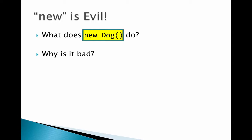Why might that be bad? You have to create objects, but why might it be bad to say `new Dog` in your code? You're creating some tight coupling. Anytime you say `new SomeClass`, you're coupling your class directly to another class. So if the other class — the Dog in this case — changes, like if his constructor changes, then we have a code hit. If we want to create a different type of instance, we're locked into Dog.